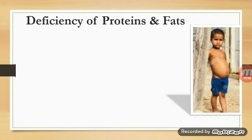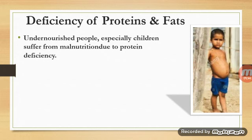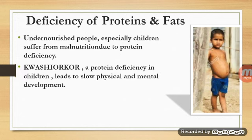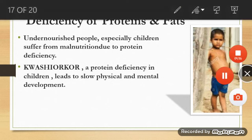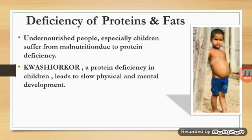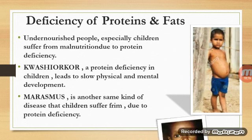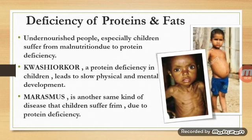Undernourished people, especially children, suffer from malnutrition due to protein deficiency. A disease called kwashiorkor results from protein deficiency in children, leading to slow physical and mental development — children develop a round belly but have skinny hands and legs. Marasmus is another protein deficiency disease where children become very skinny and the rib cage is visible through the skin.